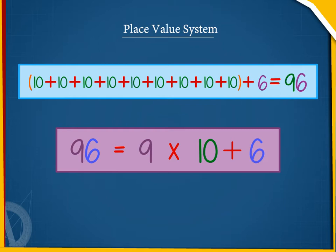Hence, there are 9 sets of 10 plus 6 ones in the number 96 as shown here. 96 is equal to 9 multiplied by 10 plus 6.